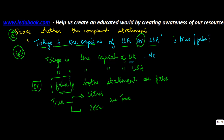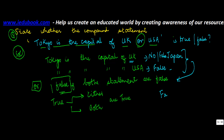Now, 'Tokyo is the capital of UK' — is that correct? No, because Tokyo is actually the capital of Japan. Similarly, 'Tokyo is the capital of USA' is also false, because the capital of USA is not Tokyo. So because both statements are false, therefore this compound statement is false. That's how you basically look into these kinds of problems.